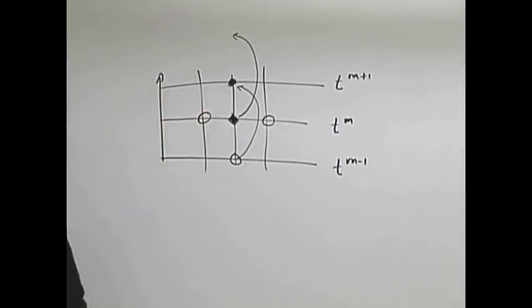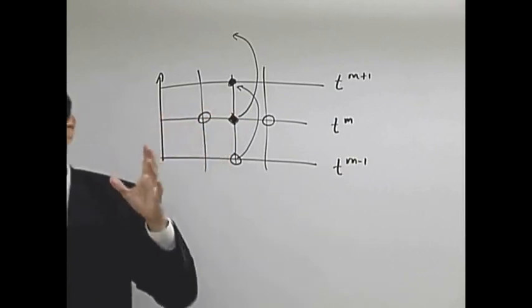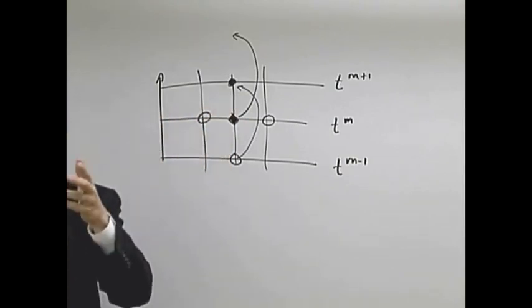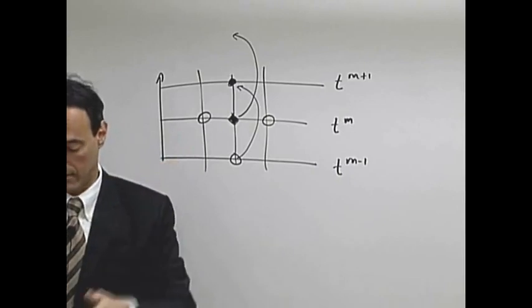So you're leapfrogging each slice in time. This one gets you this one, this one gets you this one, just like when you're a kid. And it's second order accurate in space and in time. Remember that center difference formula was order delta t squared or order delta x squared accurate.